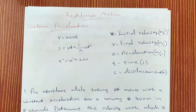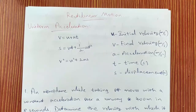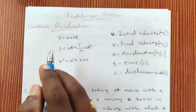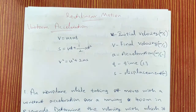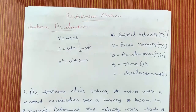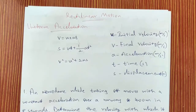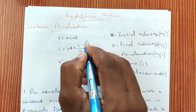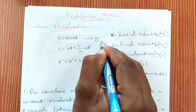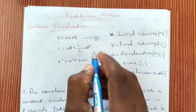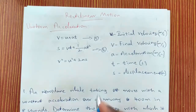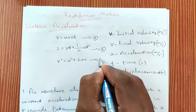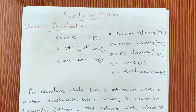As we have seen in the previous lecture, uniform acceleration means the acceleration is uniform throughout the distance. We have three equations of motion to calculate the velocity, acceleration and displacement of a particle moving with uniform acceleration. The first one is v = u + at, the second equation is s = ut + ½at², and the third equation is v² = u² + 2as.